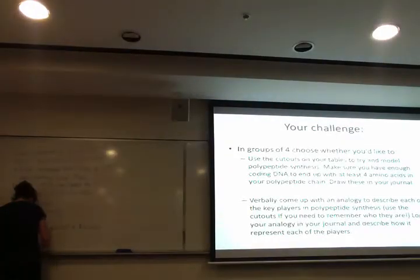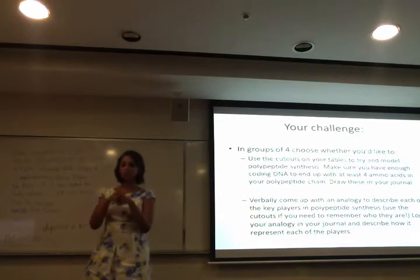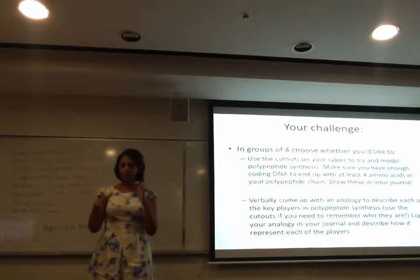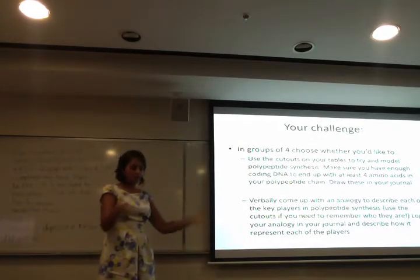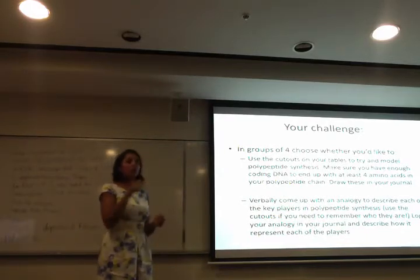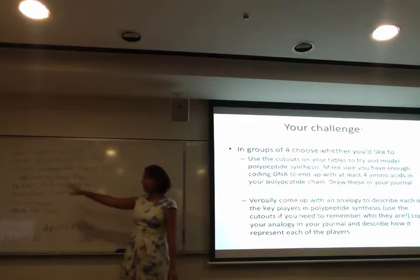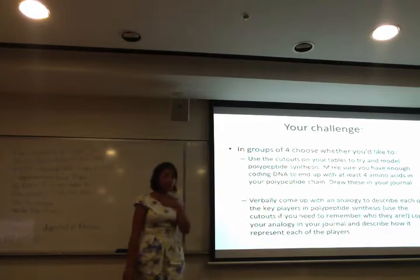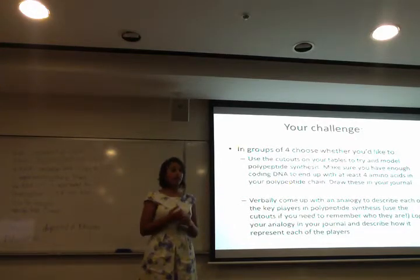Okay, so now we're going to model that so it can become clearer. Your challenge is in your groups: choose whether you'd like to do a physical model using cutouts, draw what we saw rather than using animations — just paper — or alternatively come up with an analogy to describe each of the different roles: DNA, mRNA, etc. I've suggested a sporting analogy or a business analogy, for example with a boss and workers, or anything you might come up with. I'll give you a minute to discuss in your groups which option you'd like to do, and then I'll give out the handouts.